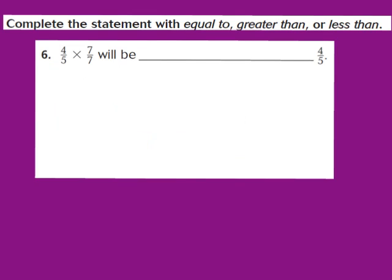Let's take a look at question number 6. Complete the statement with equal to, greater than, or less than. They give us the fraction 4/5 times the fraction 7/7, and it says it will be blank compared to 4/5. Anytime the numerator and denominator are the same numbers, we can rewrite that fraction as the whole number 1. So I'll rewrite my problem as 4/5 times 1.